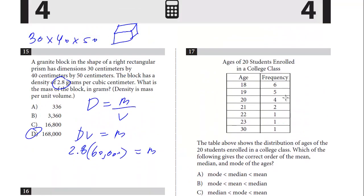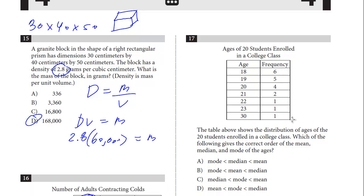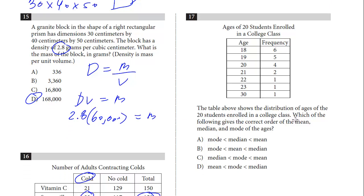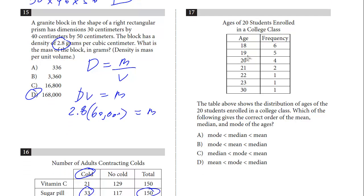Let's take a look at the last question, number 17. The table shows the distribution of ages of 20 students enrolled in a college class. Which of the following is the correct order of the mean, median, and mode of the ages? We have 18 to 30 different ages, and then how frequently those students' ages appear. Let's start with the mode, that's probably the easiest one. That's the most common occurring age, and that's 18. So we know that the mode equals 18.